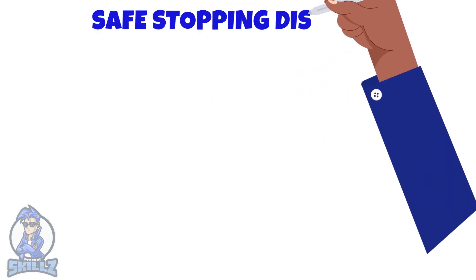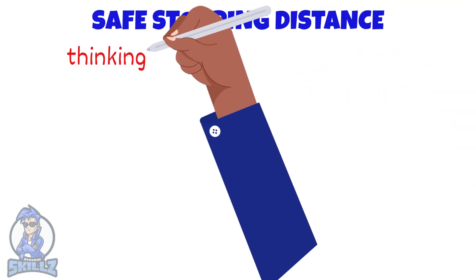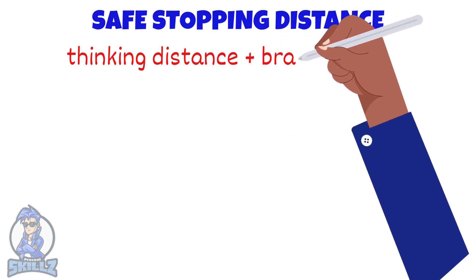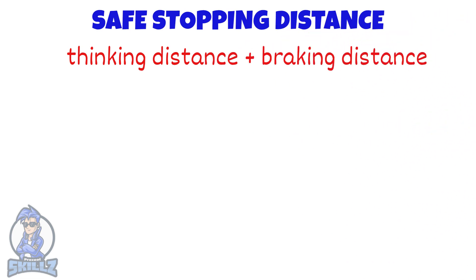Next we'll look at safe stopping distance. The stopping distance of a vehicle is the total of the thinking and braking distance. The faster the car, the greater the stopping distance.